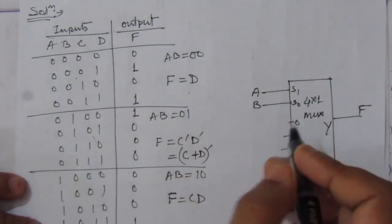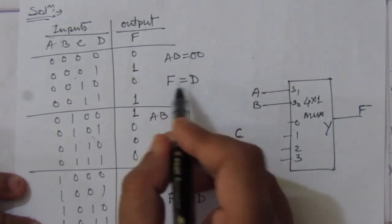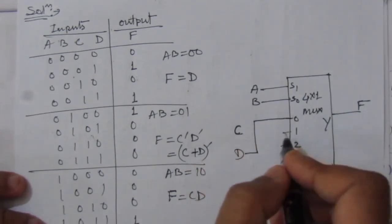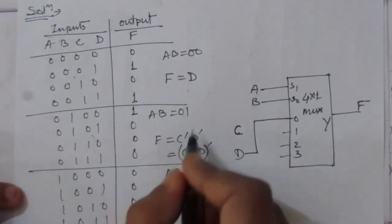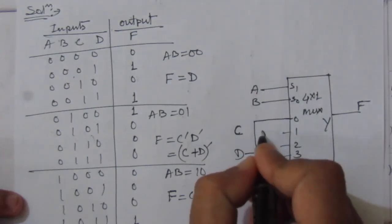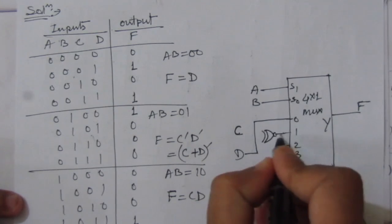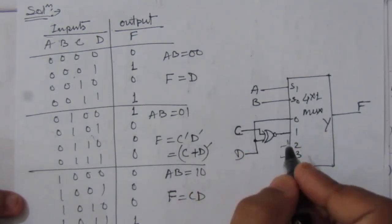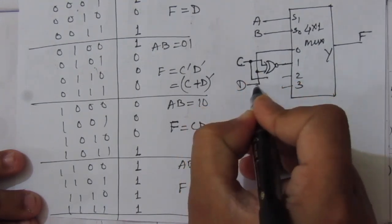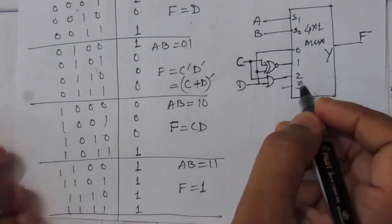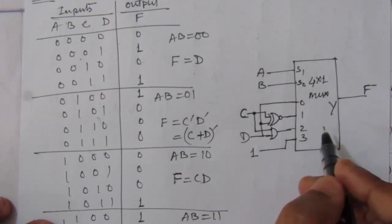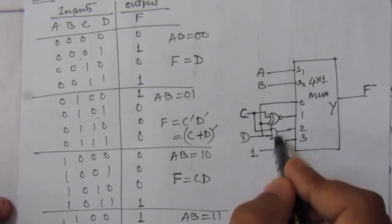C and D are the two remaining inputs. For the first port (port 0), F equal to D, so D will be connected to the 0 port. For the second port (port 1), we have a NOR operation between C and D: (C+D) complement. So use an XNOR gate — this is the NOR operation with C and D as inputs. For port 2, we have C·D, so use an AND gate with C and D as inputs to get C·D. And for the last port (port 3), we have F equal to 1, so directly connect 1 (power) to this fourth input. This is the logic circuit using a 4-to-1 multiplexer with external gates: one XNOR gate and one AND gate.